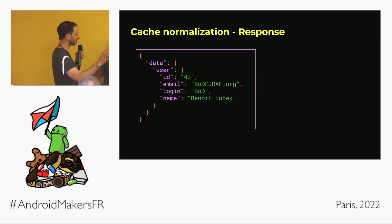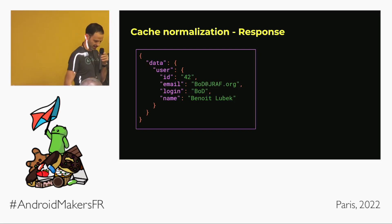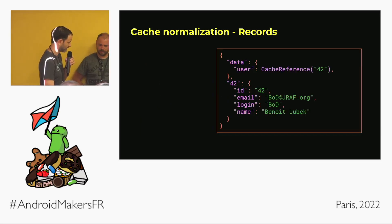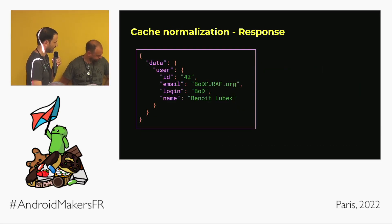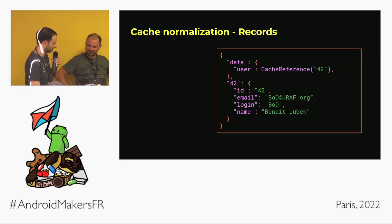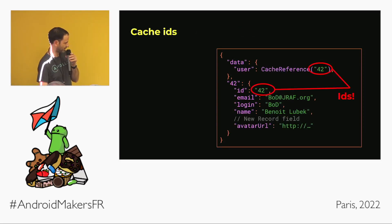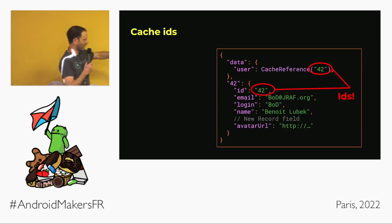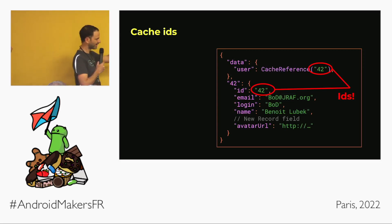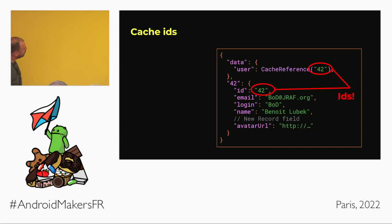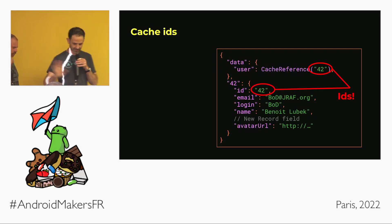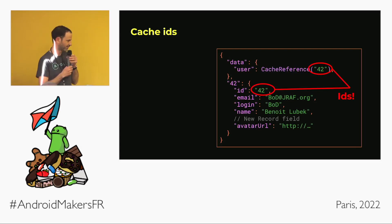If we take the simple example of just one user, we take the JSON response and flatten everything. One record will have a data key, and another will use the ID — in this case 42. If we ever get a new JSON with a new field, because everything is flattened we just store everything untyped inside the normalized cache.